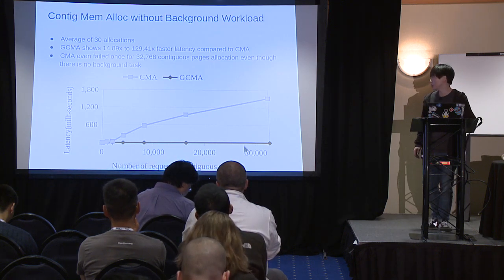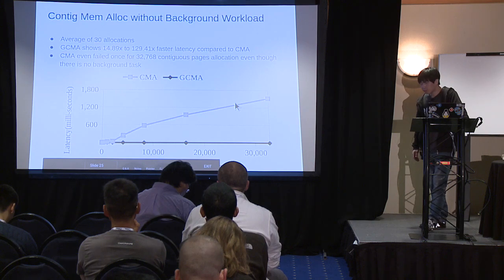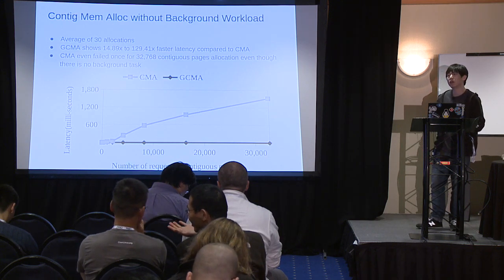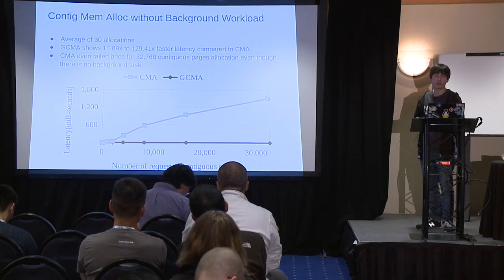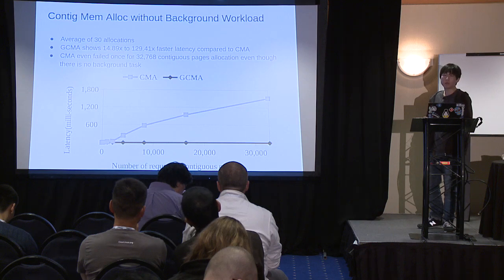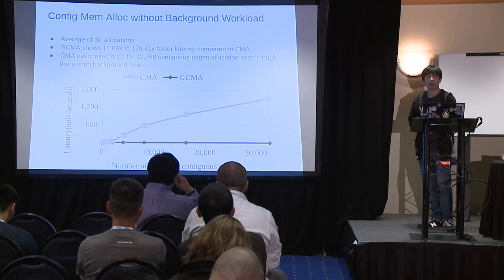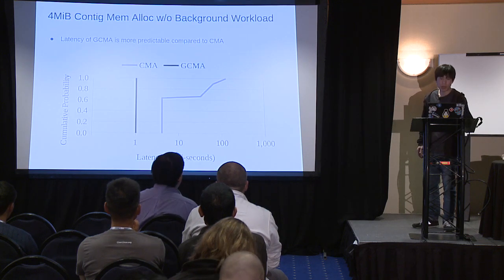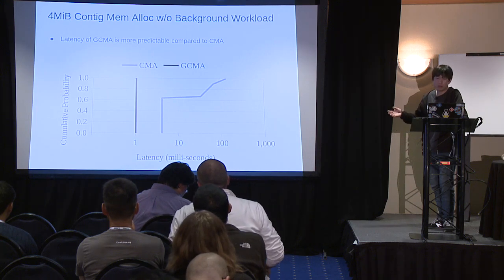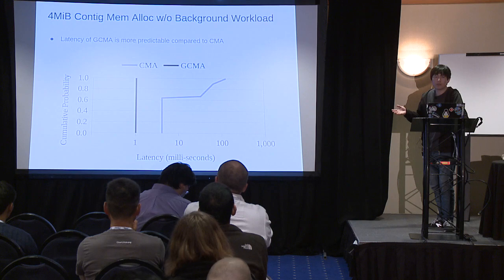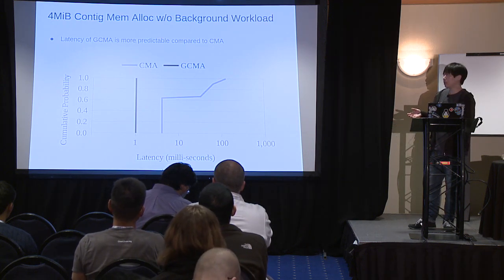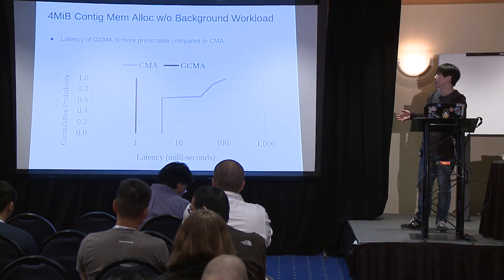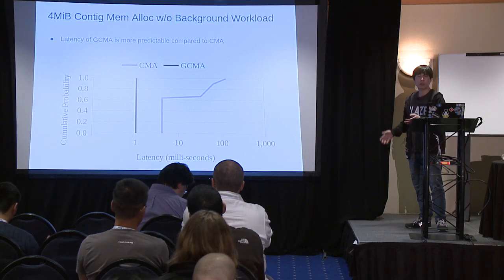First, we measured basic contiguous memory allocation latency without any background workload, for various numbers of contiguous pages. The black line shows GCMA latency and the gray line shows CMA latency. GCMA shows 14.89 times to 129 times faster latency compared to CMA. CMA even failed once for 32,768 contiguous pages allocation, even though there was no background task. Additional measurement for 1,024 contiguous pages also shows GCMA latency is much shorter and more predictable than CMA.